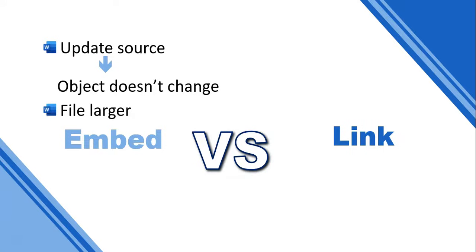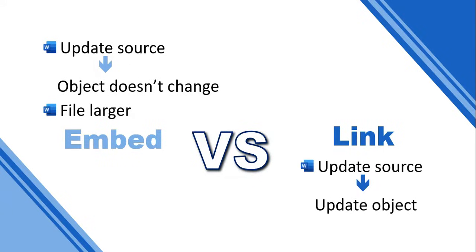A link is slightly different. A link means if you update the source, you also update the object that you've linked it to — it's not actually in your Word document, it's just connected. If you change the original, you will see that reflected in your main Word document. This makes the file smaller, but the problem is if you move this file to a different location, maybe on a flash drive, it sometimes won't be able to access the original file because it's on a different computer. So how do we do this in Word?